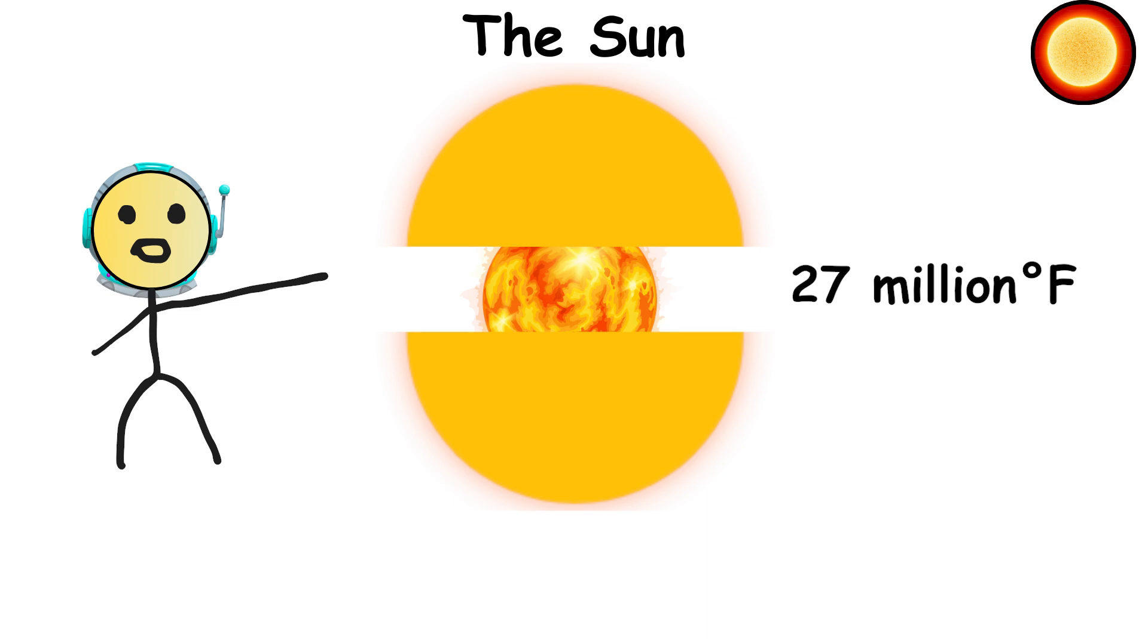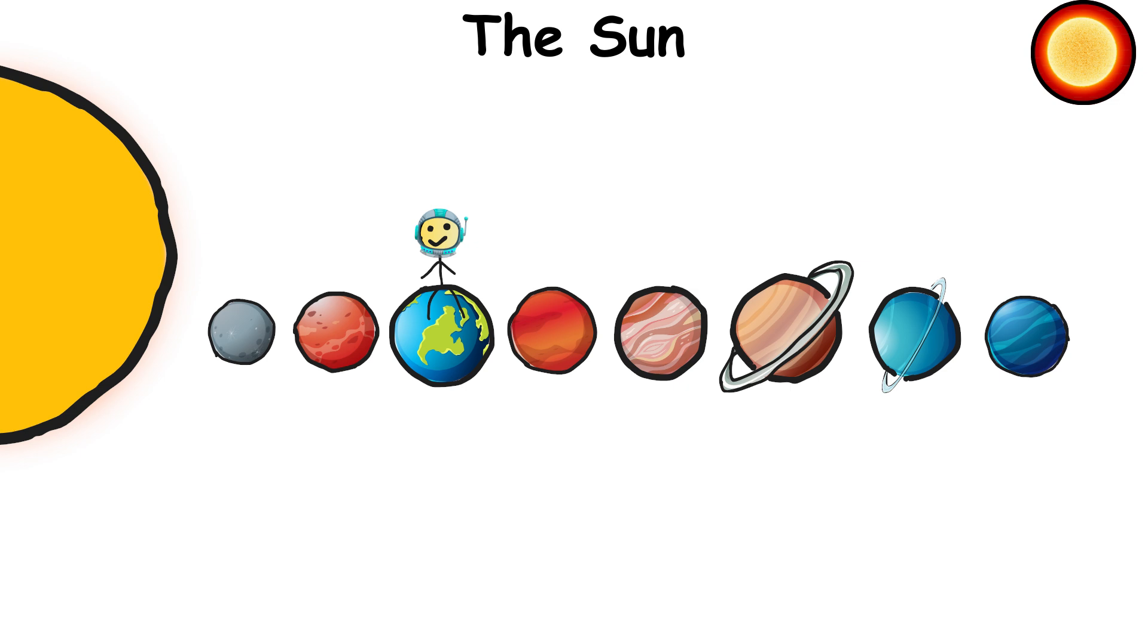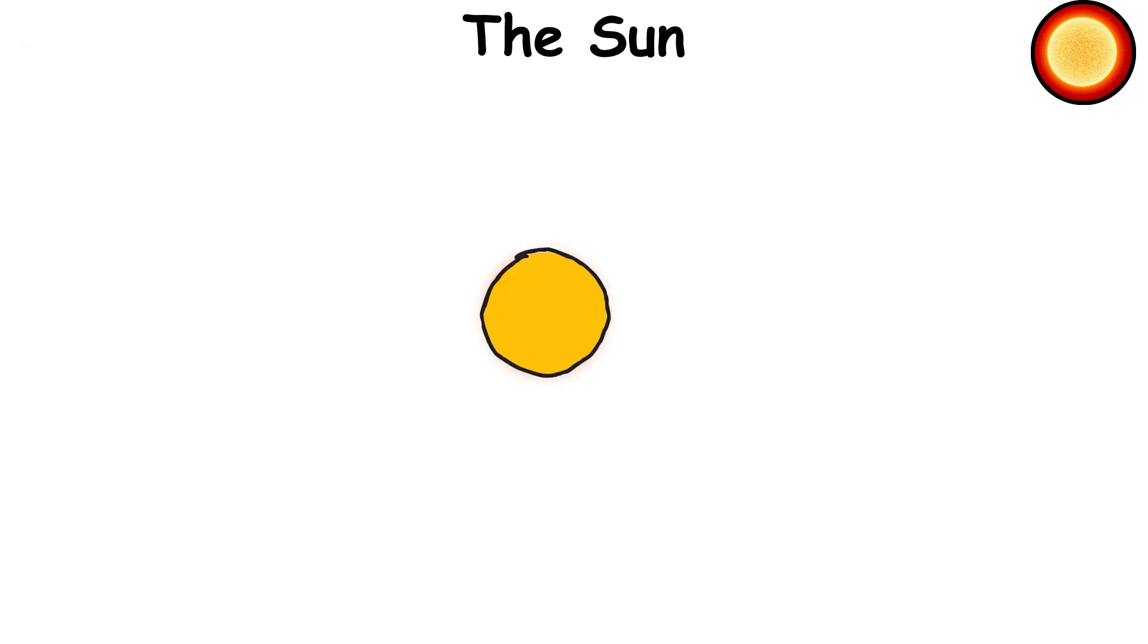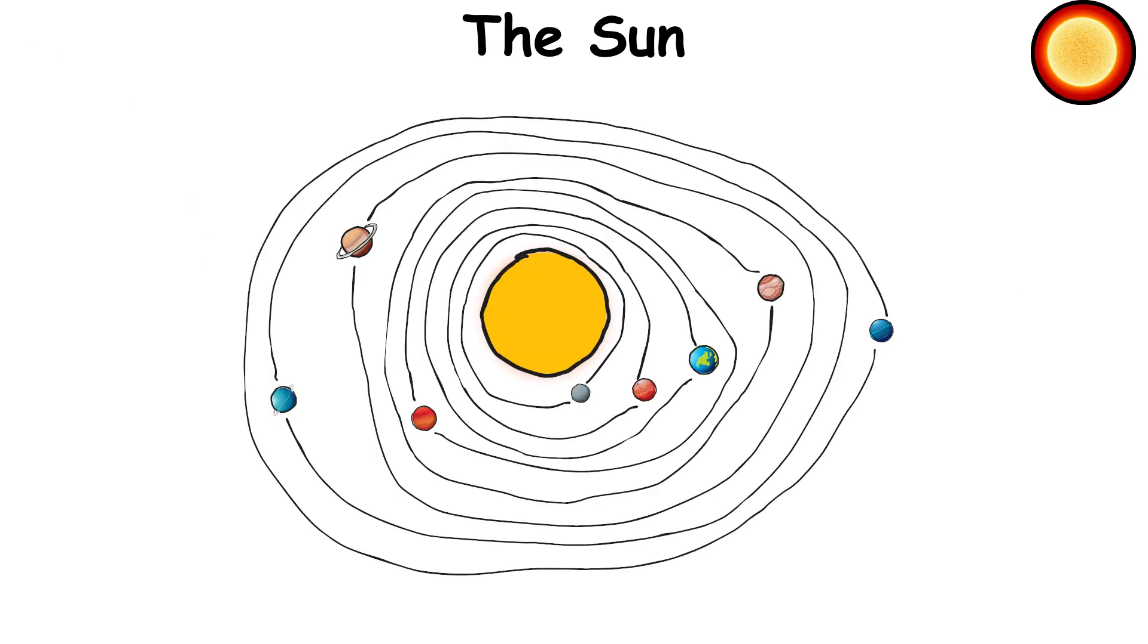Not exactly the place for a suntan, unless you want to be vaporized instantly. Life here? Nope, but it's thanks to the sun that life can exist on Earth. Fun fact, the sun's gravity is what keeps everything in the solar system, from planets to comets, tethered in orbit.